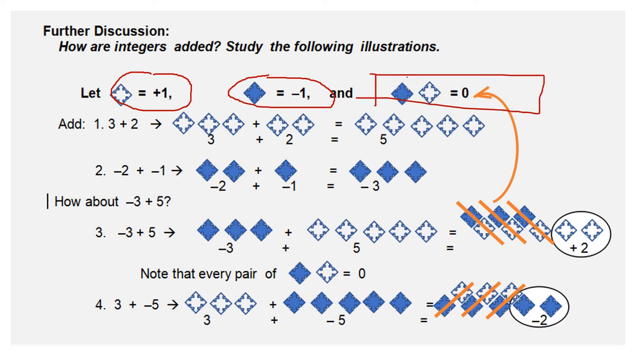When you add a negative and a positive tile together, when they pair, it is equal to zero. Think of it like if you have one peso, and you have a debt of negative one, when you pay your debt, you have no debt, but you also have no money left. So it equals zero.